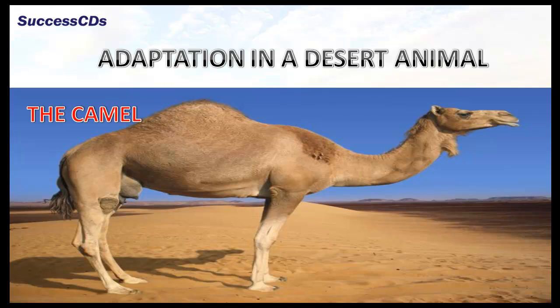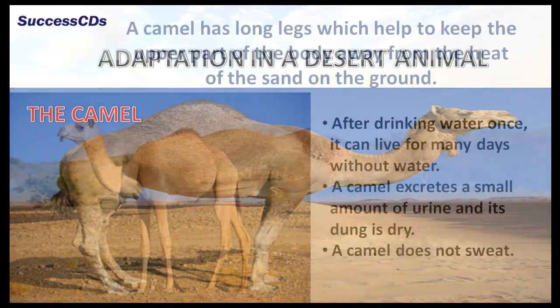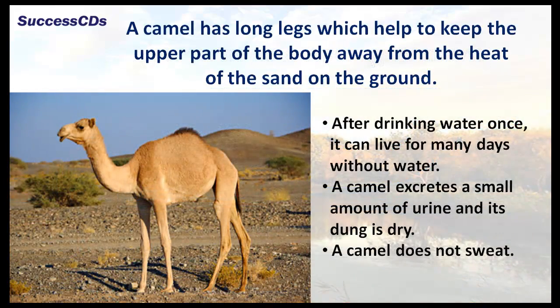A camel is an animal well adapted to live in a desert. It has long legs which help to keep the upper part of the body away from the heat of the sand on the ground. After drinking water once, it can live for many days without water. A camel excretes a small amount of urine and its dung is dry. A camel does not sweat.